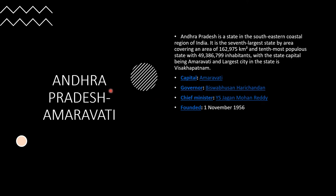The first one is Andhra Pradesh; the capital is Amravati. Andhra Pradesh is a state in the southeastern coastal region of India. It is the 7th largest state by area, covering an area of 162,975 km, and the 10th most populous state with 49,386,799 inhabitants. The state capital is Amravati and the largest city in the state is Visakhapatnam.